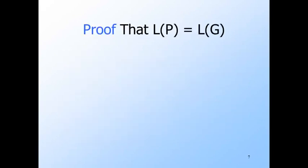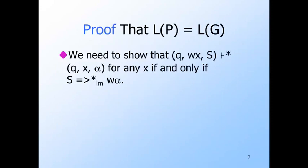We're going to prove that P accepts exactly what G generates. Formally, we will show something more general. It seems we always have to show something more general than what we really want. Here we show that if P consumes W from its input, starting with only S on its stack, and winds up with stack alpha, that is, this ID becomes that ID, then in G there is a leftmost derivation of the string W alpha.